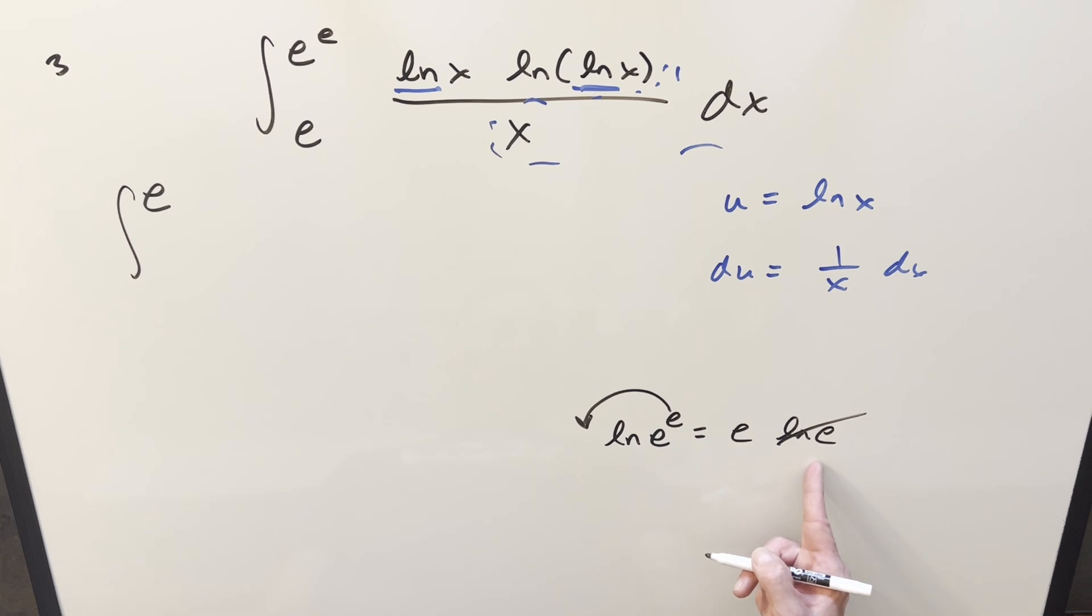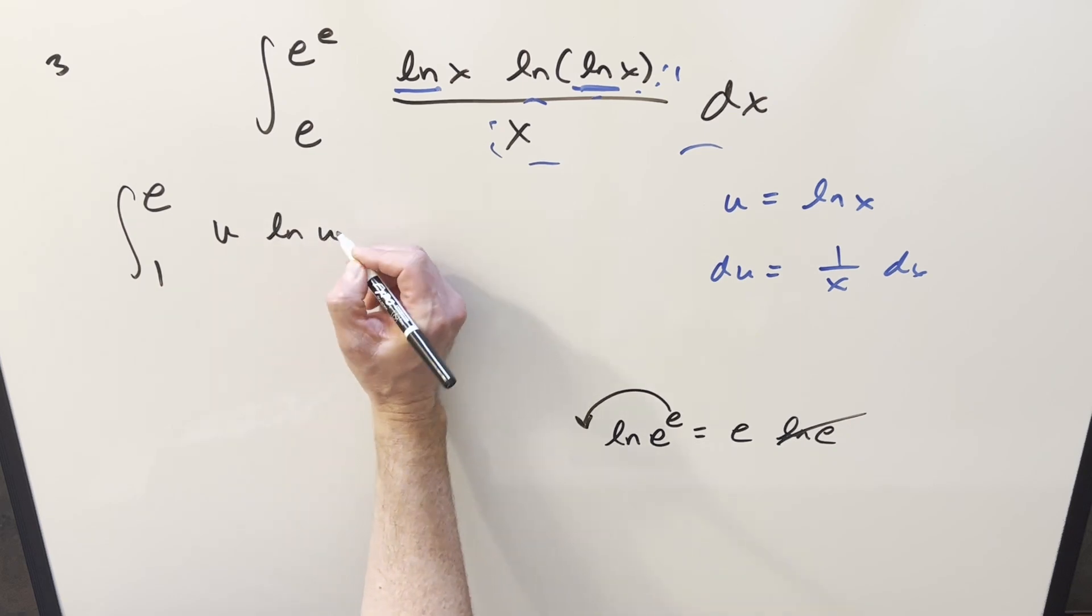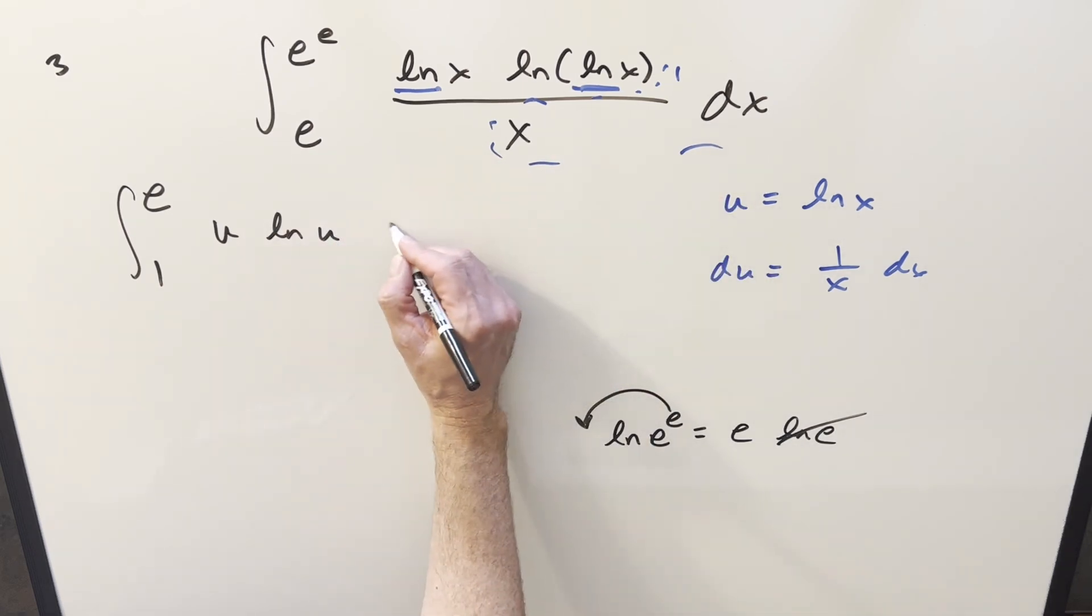We plug the e in, well that's this thing all over again. Natural log e is just going to be 1. Updating the integral, what we're going to get is u, ln u for the numerator, and then everything else is just du.